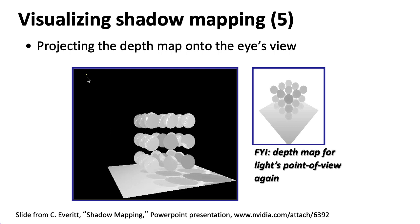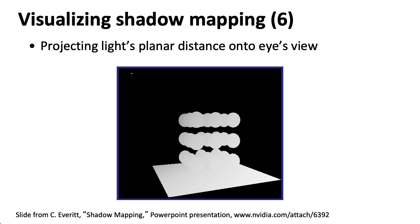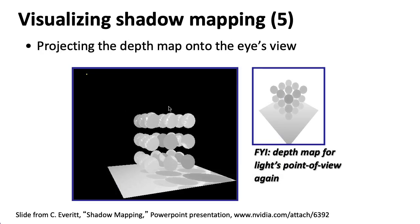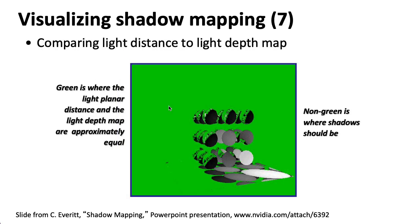To help visualize further, let's imagine taking this z-buffer image from the point of view of the light and projecting it onto the image from the point of view of the camera. We can facilitate this using 2D projective texture capabilities of the GPU, similar to the slide projector effect from the last lecture. We also make an image that indicates the distance between the light and each point as seen from the camera. The game is then comparing these two images — places in green are where those values more or less match, and the places that aren't green are where you wind up with shadows.